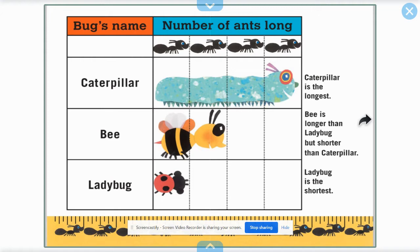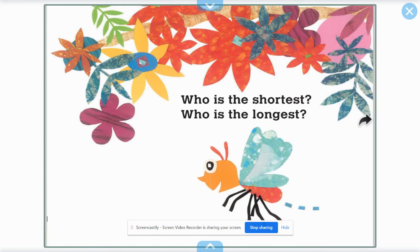Caterpillar is the longest. Bee is longer than ladybug, but shorter than caterpillar. Ladybug is the shortest.